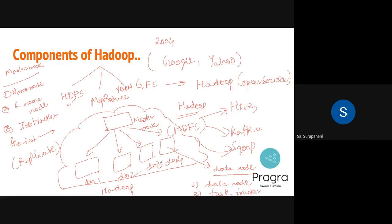The master node has three components: there is something called name node, there is something called secondary name node or backup name node, and there is something called job tracker. The data node has two components: data node and task tracker. Whenever your file.txt arrives, the master node understands which locations have space and splits and saves this data — file.txt will be saved here as copies: file one, file two, file three. Data node four is empty for now.